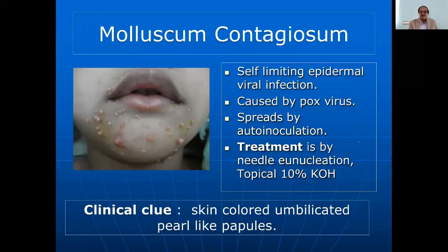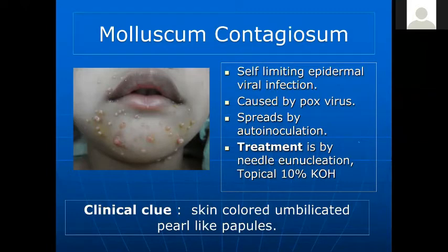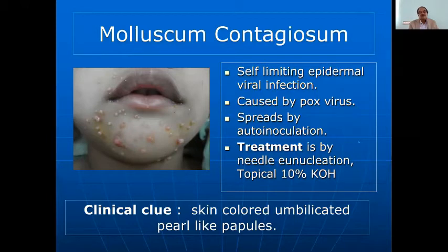Molluscum contagiosum is a self-limiting epidermal viral infection caused by a poxvirus that spreads by auto-inoculation. The clinical clue is central umbilication of the skin-colored papules, which is characteristic. Treatment is by needle enucleation, topical 10% KOH preparation to destroy the lesions, or oral ranitidine as some use.